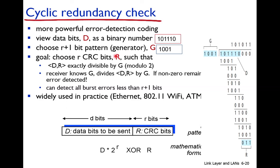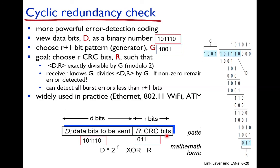If G is 4 bits then R will always be 3 bits. The data bits and the R bits are sent to the receiver. Both sender and receiver must know G in advance — for example, 1 1 0 0 1 is known to both sides. The sender divides D by G using modulus-2 to compute R, which becomes the error detection code sent along with the data.